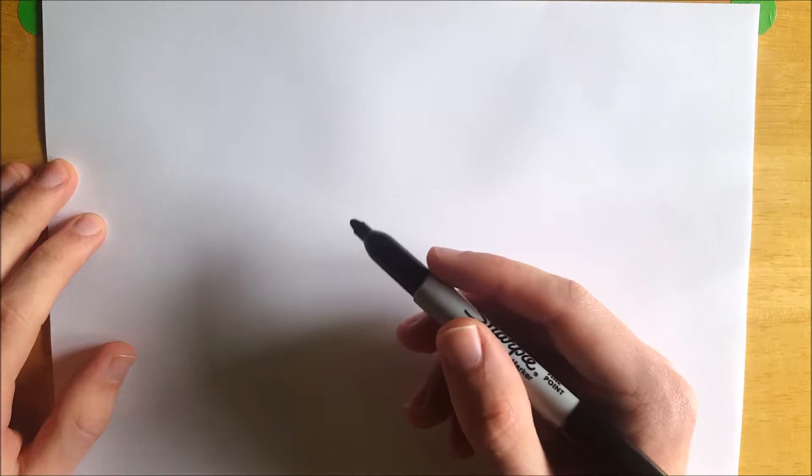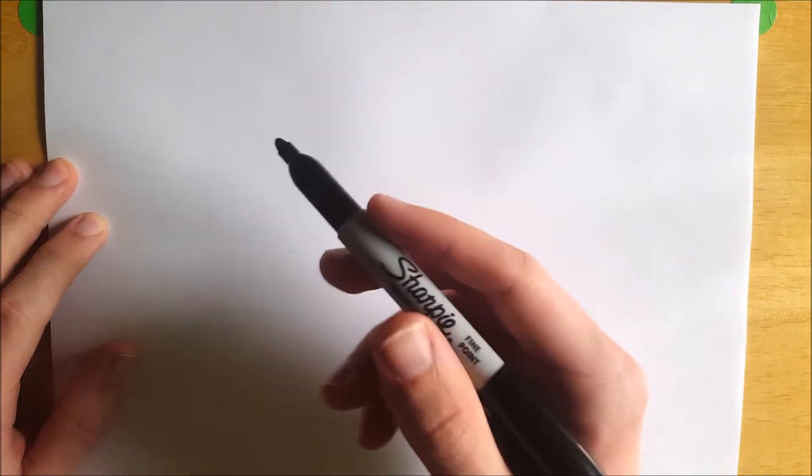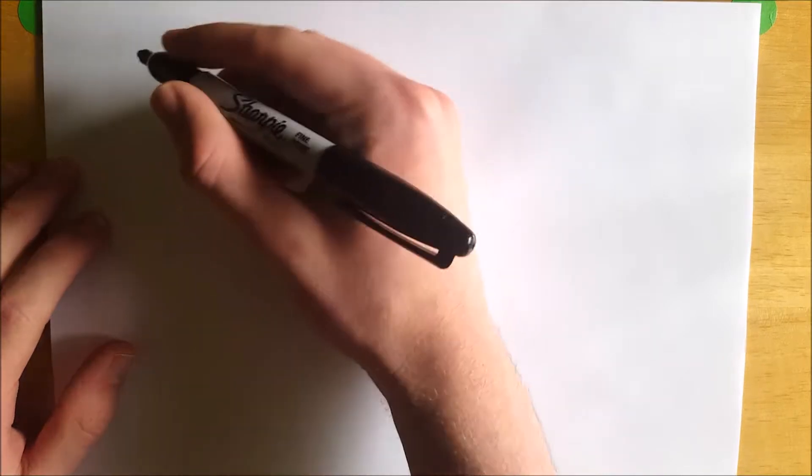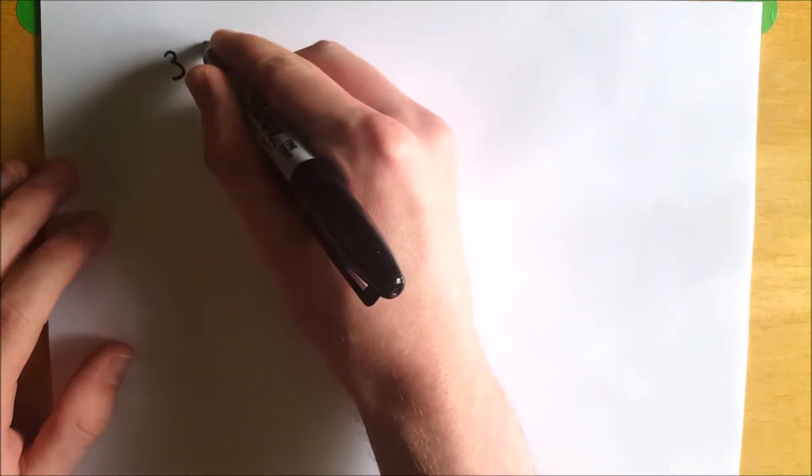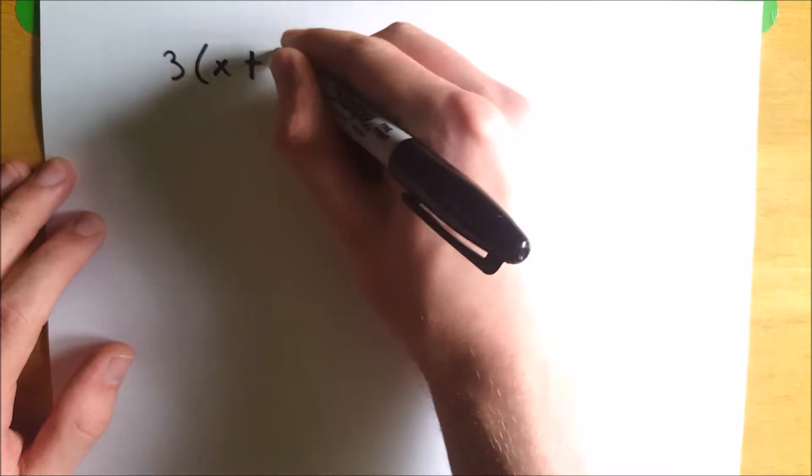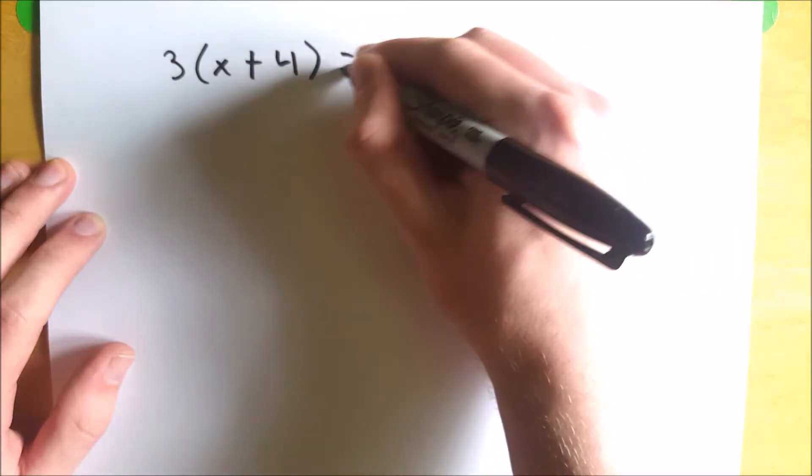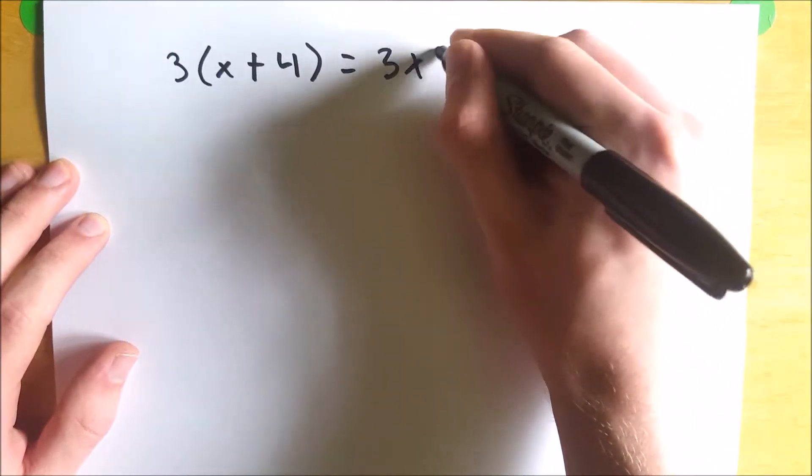So the distributive property, for those of you who don't know, which probably none of you, otherwise I can't imagine you'd click on this video, is the rule that tells us, for example, that if we have 3 multiplied by x plus 4, we get 3x plus 12.